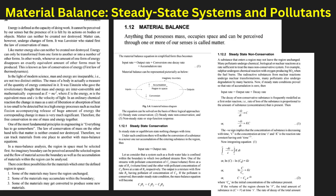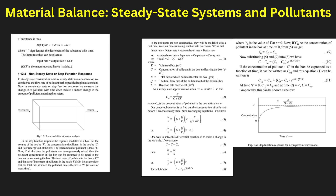Material balance, steady-state systems, and pollutants. Material balance principles analyze the flow of substances within environmental systems. In a steady-state system, input equals output, maintaining equilibrium. Pollutants disrupt this balance, leading to contamination and ecosystem damage. Industrial emissions alter atmospheric composition, causing air pollution. Wastewater discharge affects aquatic life by introducing toxic chemicals.